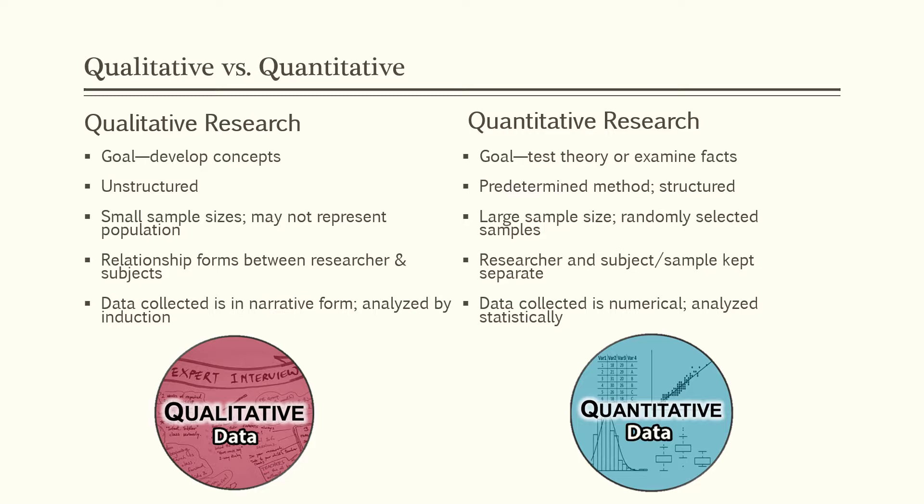Quantitative research has a goal of testing a theory or examining facts. It involves using a predetermined method in a structured fashion. The sample size is generally large and randomly selected, and the researcher and subjects are kept separate. Quantitative data is numerical and statistically analyzed to provide the results.